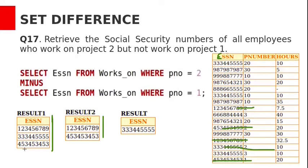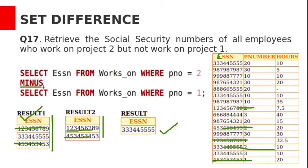In the set difference, we include rows from the first query but not the second query. The rows that appear in result 2 must be removed from result 1. After removing the matching rows, the final result is 1 row. Set difference is implemented with the MINUS operator.